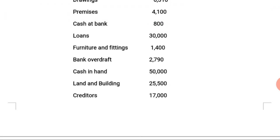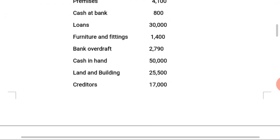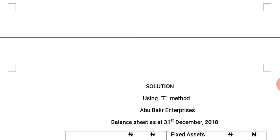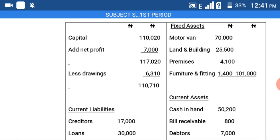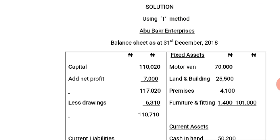Now let's prepare the balance sheet. As we know, we use two formats: the vertical format and the conventional format, popularly known as the T-format. We will start with the T-format. The heading is: Abubakri Enterprise — Balance Sheet as at 31st December 2018, with denomination in Naira.